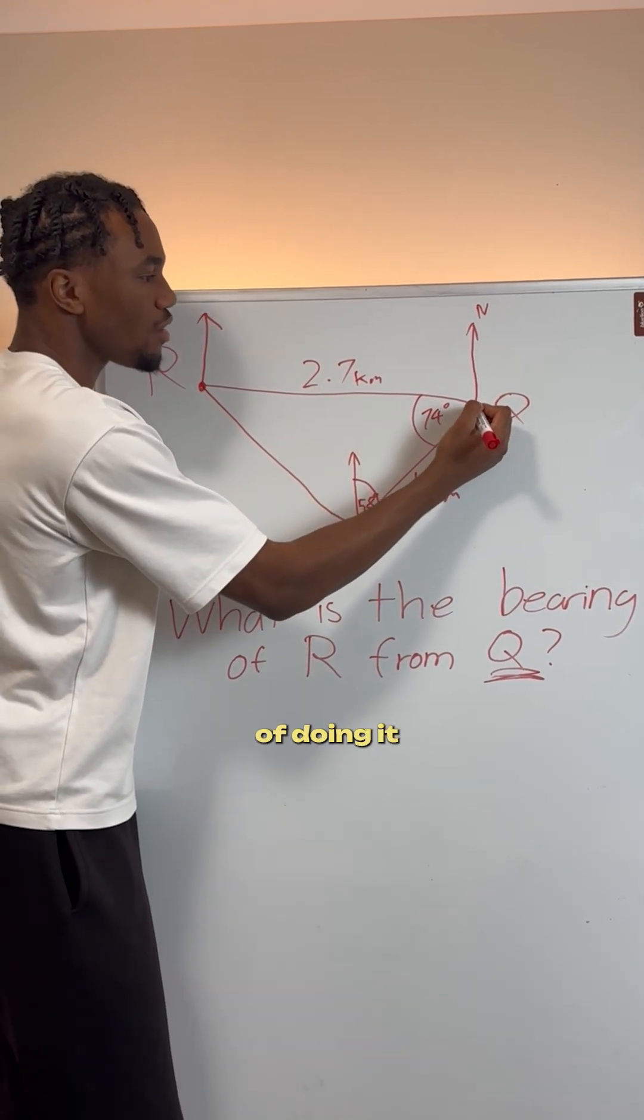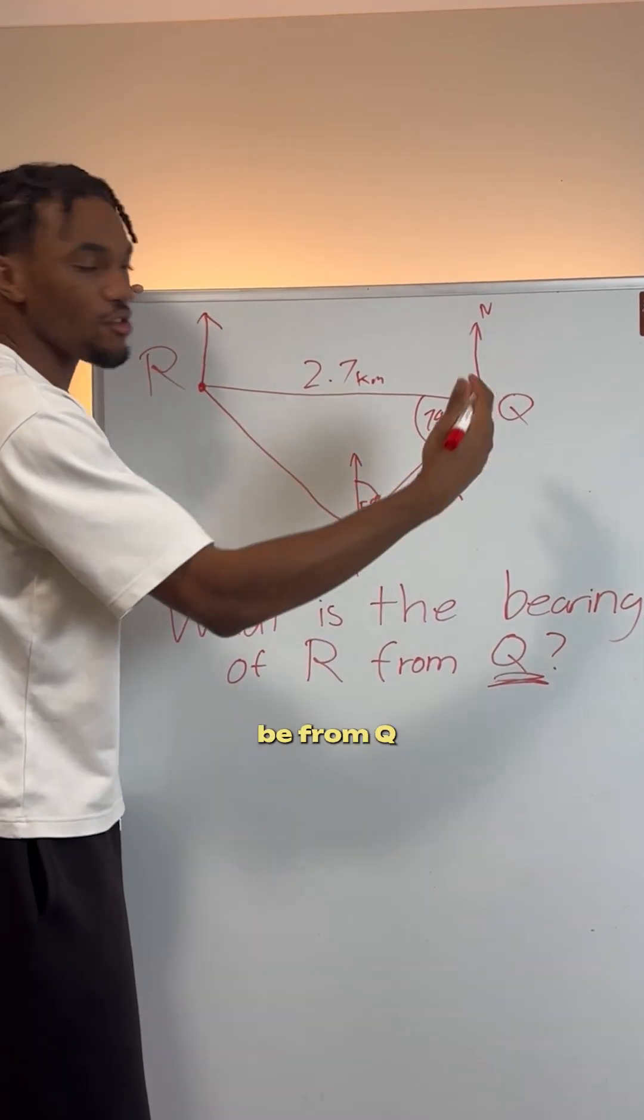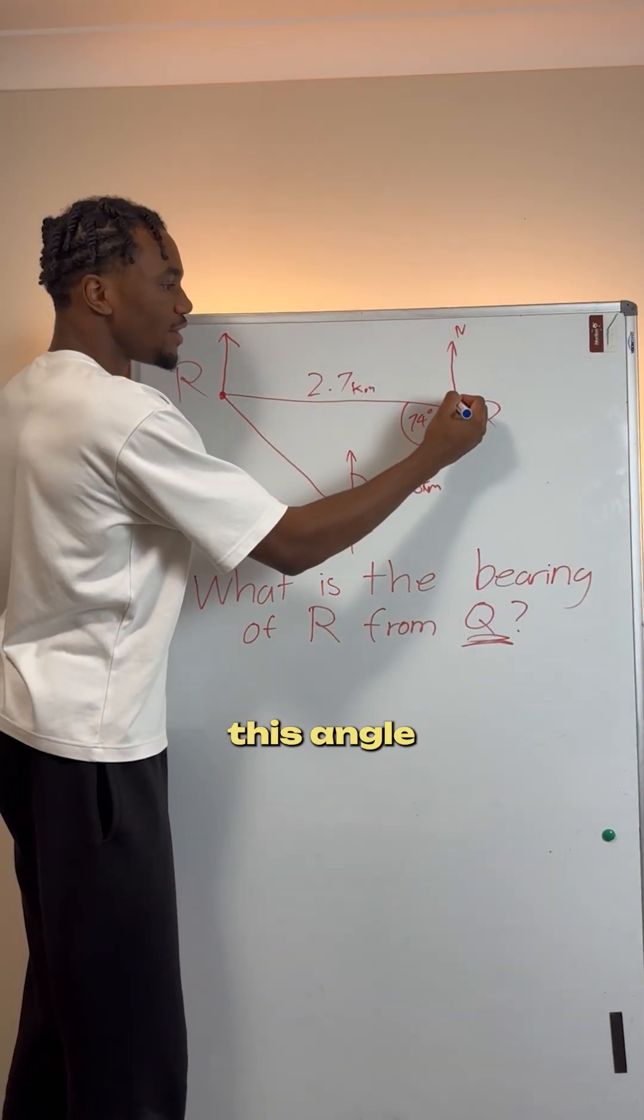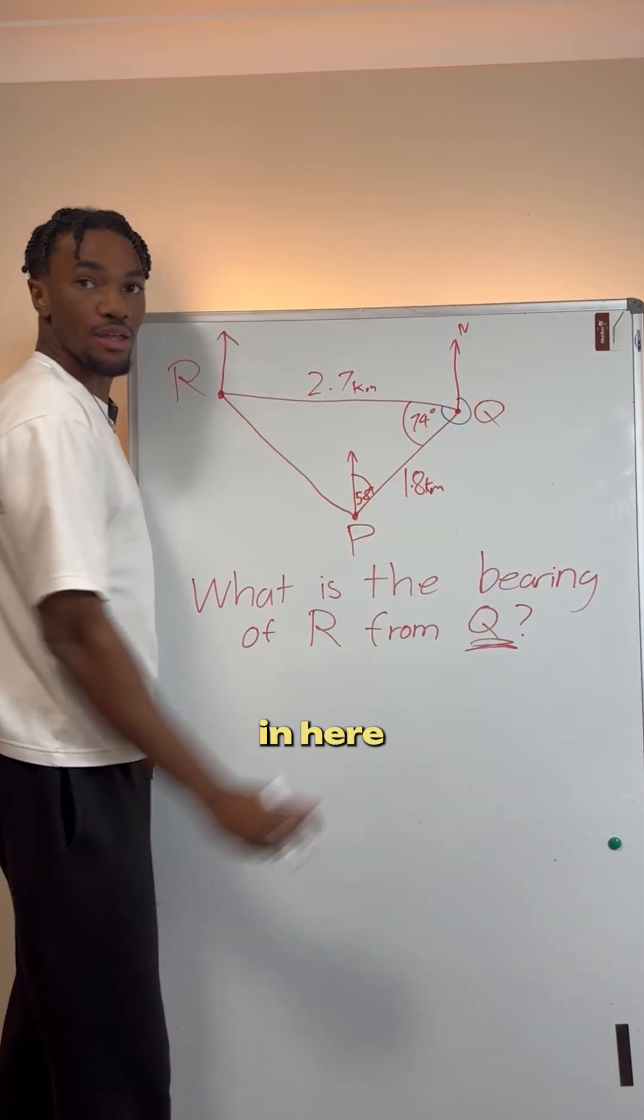So many students make this mistake of doing it from R when it's meant to be from Q. What do we do in this situation? We have to find this angle in here. How do we do that?